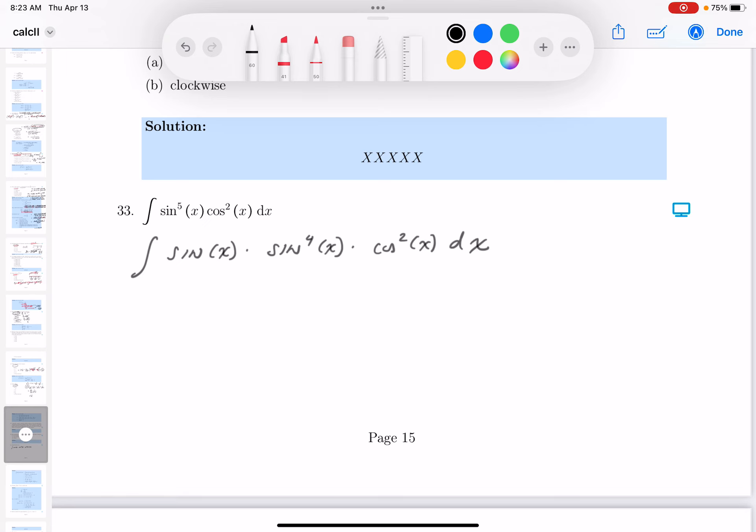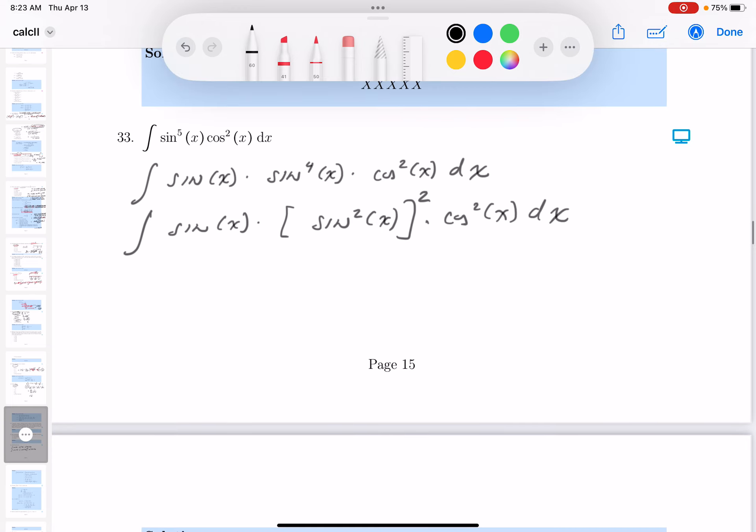All right, what I'm going to do now is, let's just try something. Sine x, I'm going to write this thing as sine squared, that whole thing squared, times cosine. Let's keep rewriting it. Sine x, and the sine squared is actually 1 minus cosine squared, squared, and that's going to be cosine squared x.